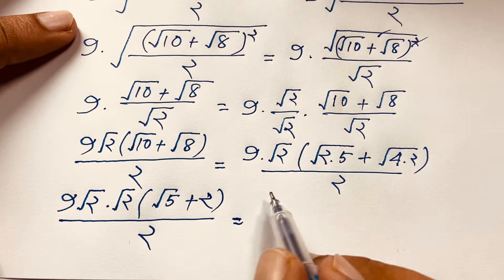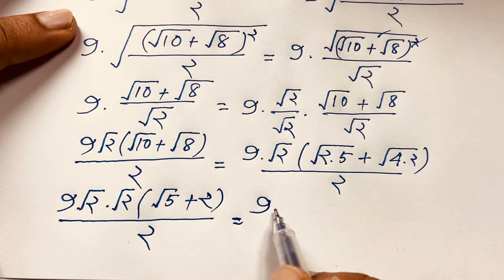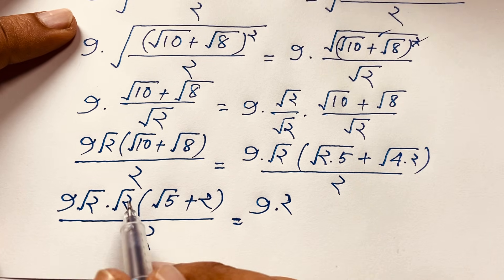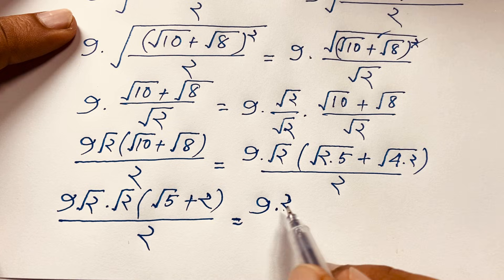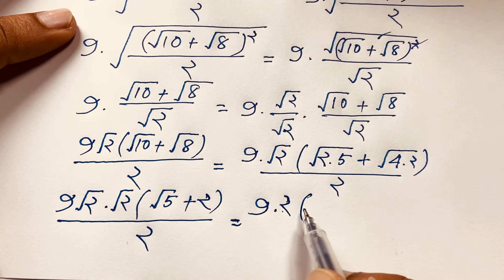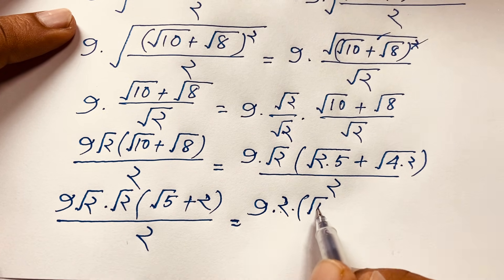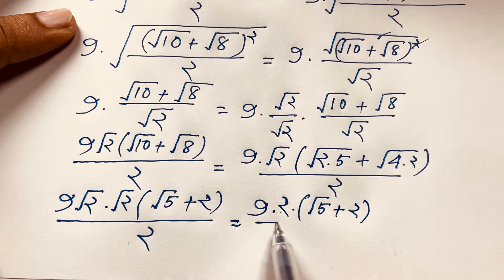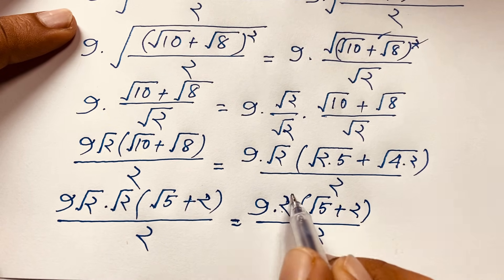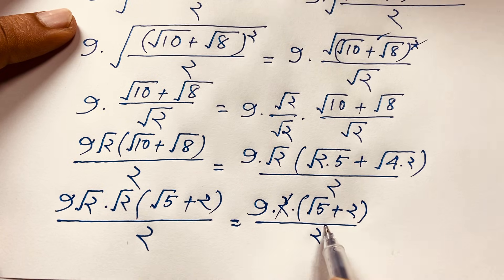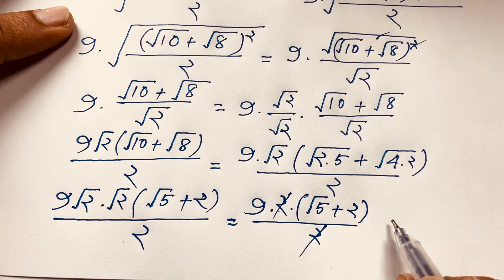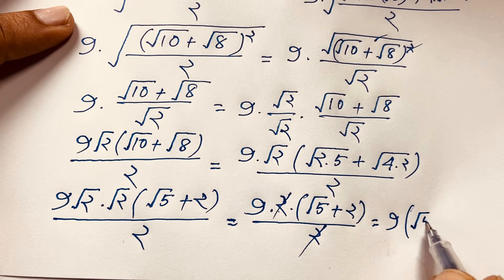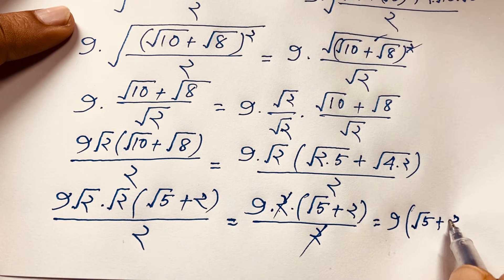At this moment, square root 2 times square root 2 equals 2, so the 2 values cancel out. We find our final answer: 9 times (square root 5 plus 2).